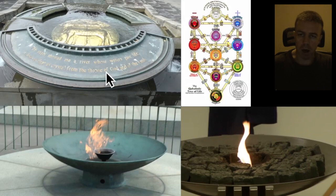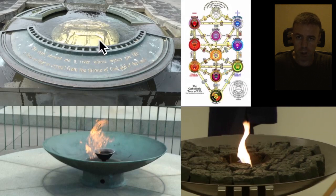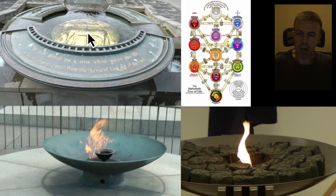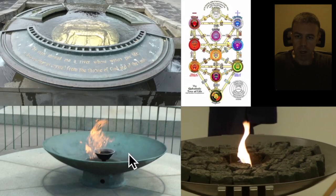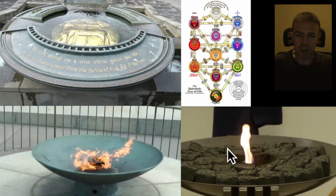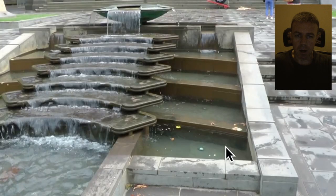I want to suggest that the structure is representative of the earth, the water, the air around it, and this middle part in here — the fire. I'm showing two cauldrons: this one happens to be at the war memorial in Melbourne, and this one at the war memorial in Hyde Park, Sydney. I've got a couple of other things to show you regarding this fountain, so let's keep going.